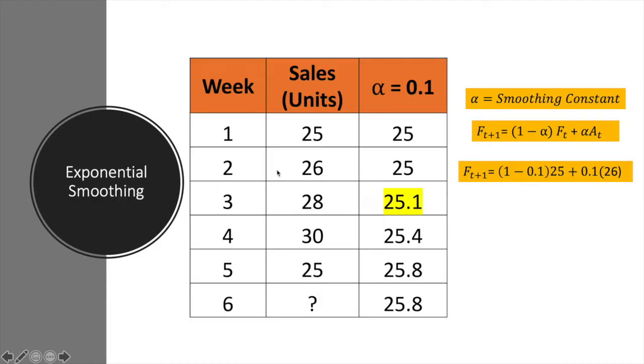For exponential smoothing, this is the formula that we use: F_{t+1}, if you want to find this forecast value, equals (1 - α). Alpha is referred to as the smoothing constant which takes the value between 0 to 1, and we have F for the period of t plus α times A_t. A refers to the observed value in period t.